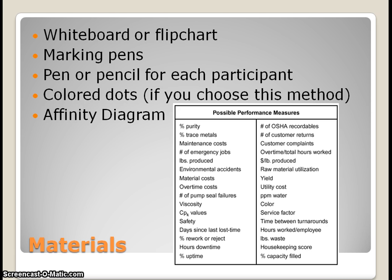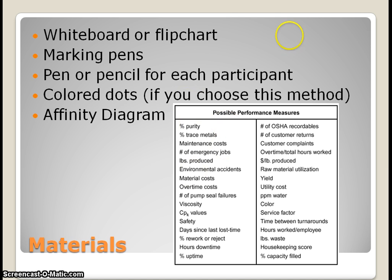Another idea to implement is called an affinity diagram, with an example shown here. This is an organized way of putting all your ideas together in a chart. For example, one group used it to organize possible performance measures for their company after a brainstorm. It's a helpful way to organize all the ideas so that everyone can clearly see them before voting begins.